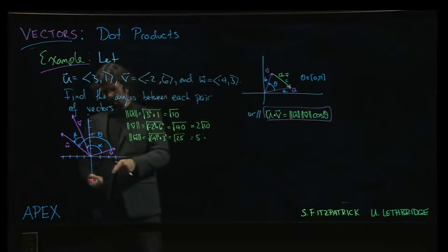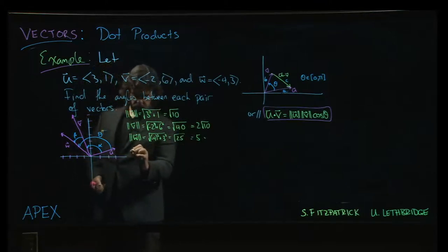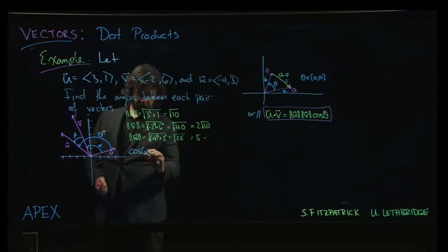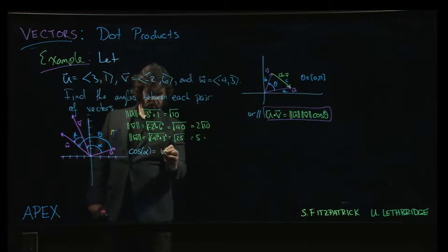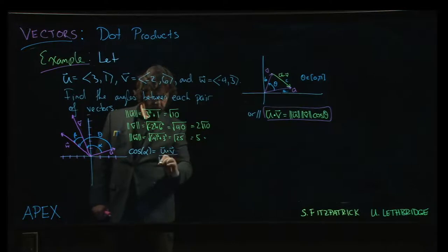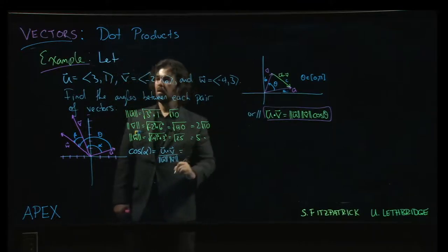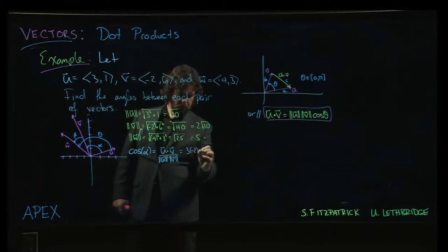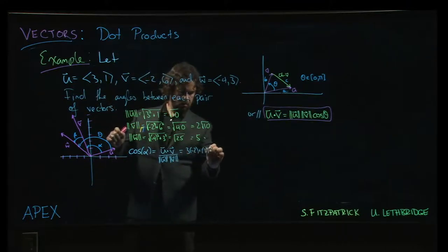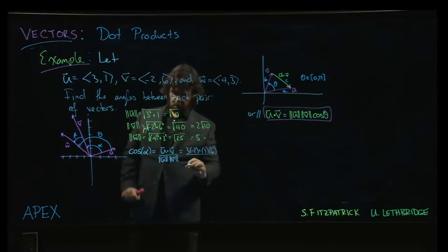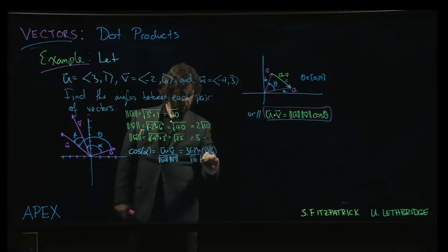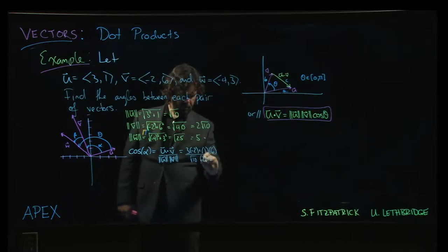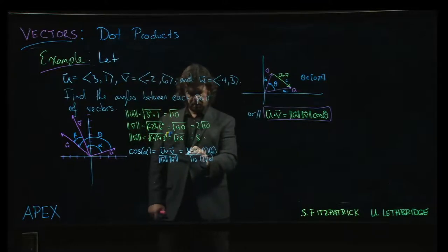So how about the angles? Well, let's start with alpha. Comes first in the alphabet, right? Cosine of alpha is u dot v over the magnitude of u times the magnitude of v. Okay. So looking at our vectors up here, we have 3 times minus 2, and then we have 1 times 6, divided by root 10 times 2 root 10. But this time around, we get minus 6 plus 6. We get 0.